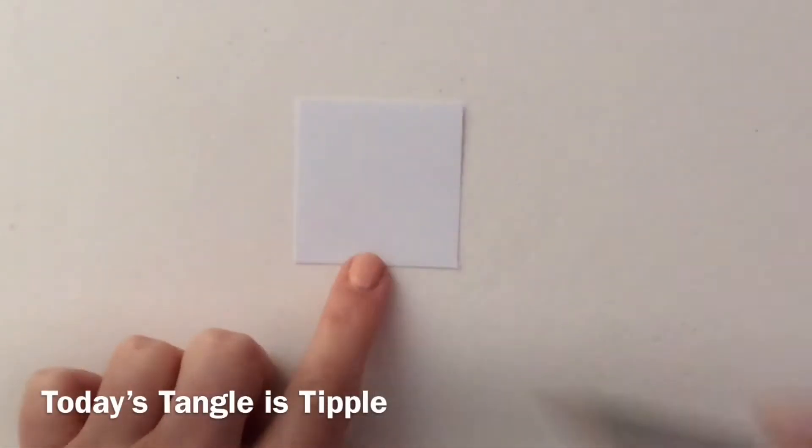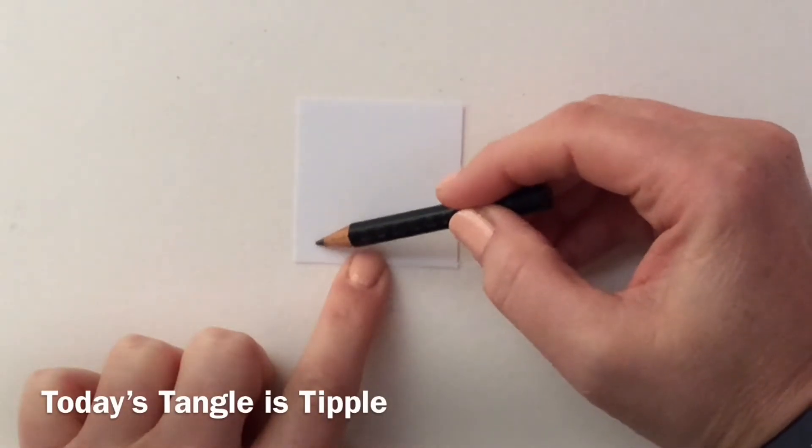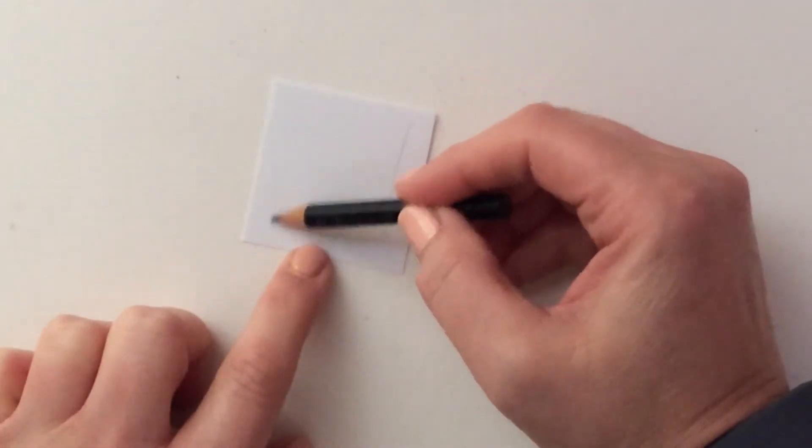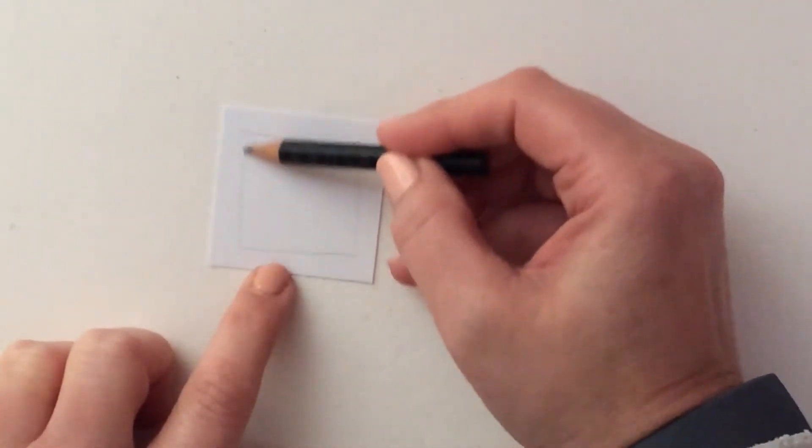Starting with our pencil and our square piece of card, I'm just drawing a little square border, just to give us somewhere to start tangling in.